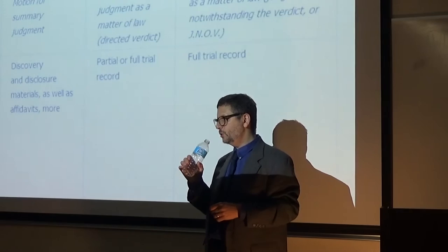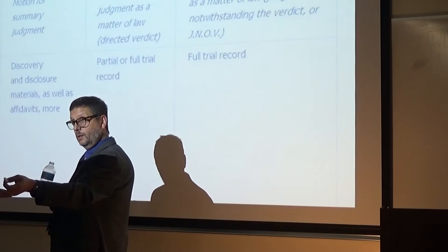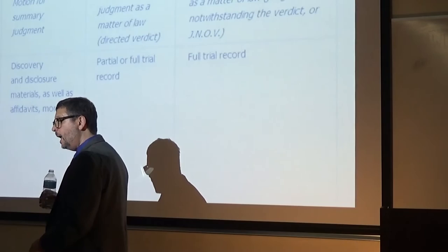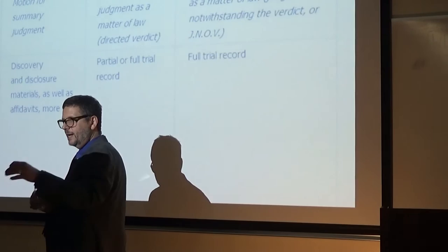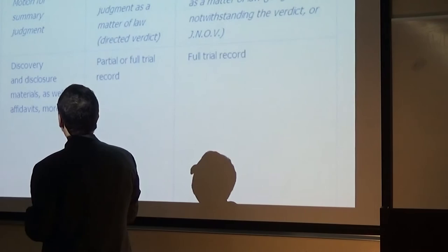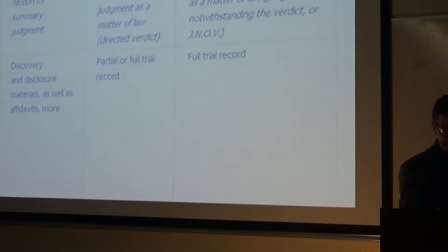So that's the difference between remittitur, which is constitutional in federal court, and additur, which is not constitutional in federal court. The Seventh Amendment jury right, which applies to issues of law and on equitable issues, only applies against federal courts. The Seventh Amendment jury right does not apply in state court — it only applies in federal courts.